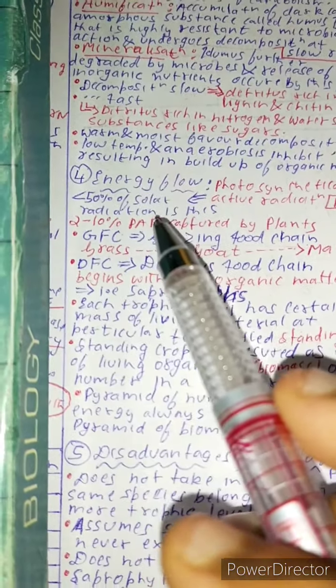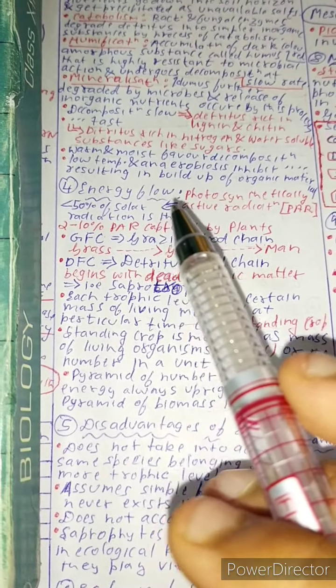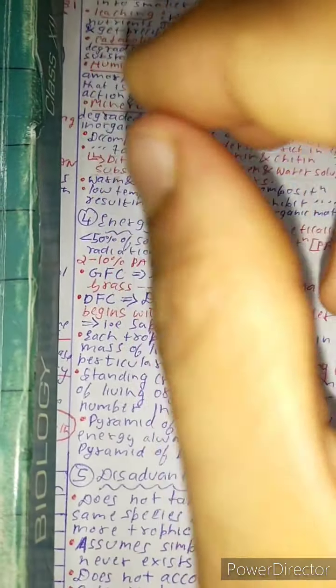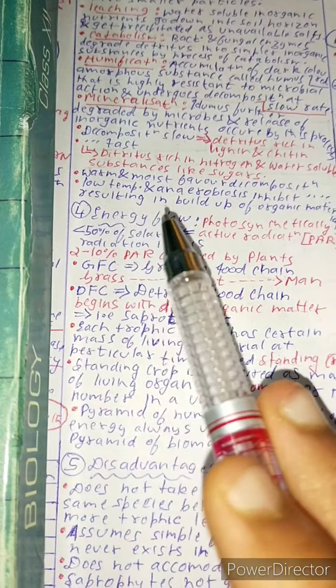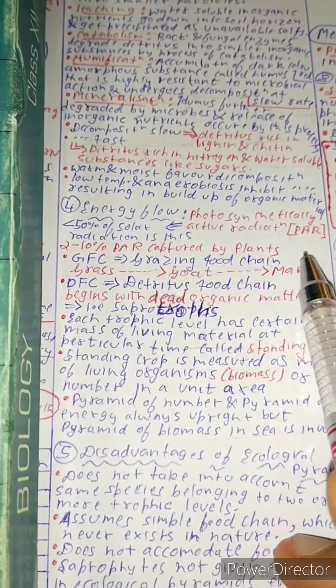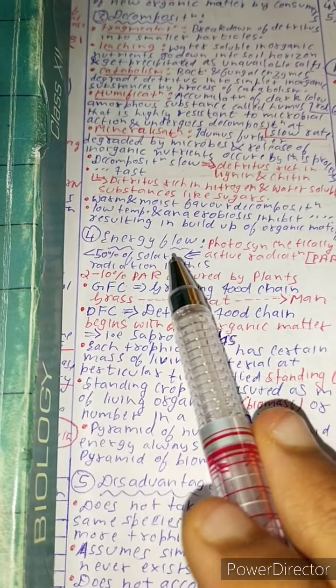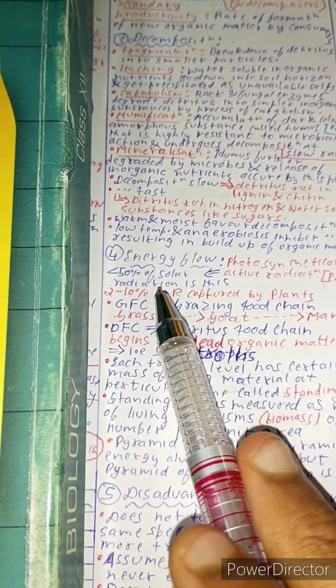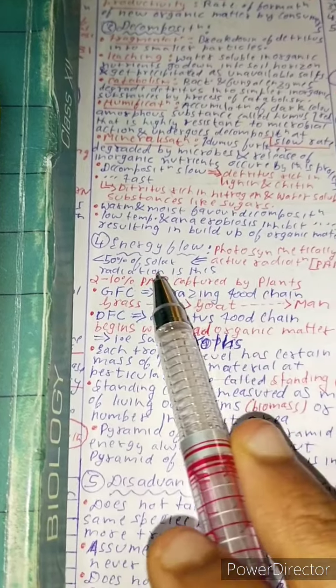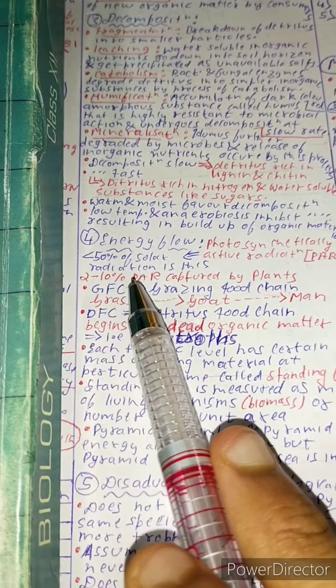Now what is energy flow? First of all, before we have to know about energy flow, we need to know a term that is called PAR, that is photosynthetic active radiation. Less than 50 percent of the solar radiation is this PAR, and two to ten percent of the PAR is captured by plants.